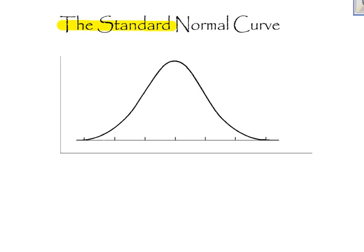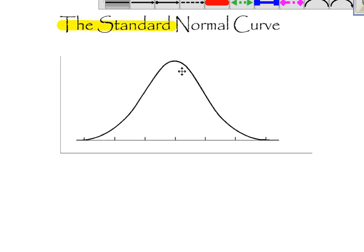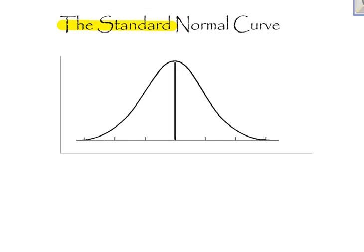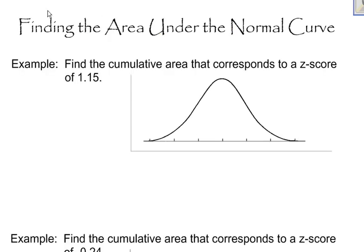When I'm dealing with z-scores, the z-score of the mean right here in the middle is always going to be 0. Z of the mean is always going to be 0, and then every one of these standard deviations away will have a z-score that relates to it. So this would be a z-score of positive 1, this would be 2, this would be negative 1, and this would be negative 2. So I'm going to be using the standard normal curve for this example.